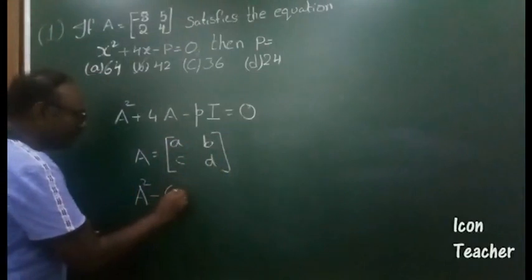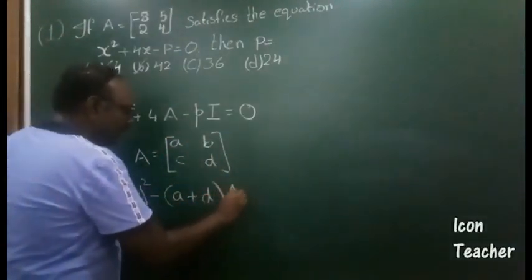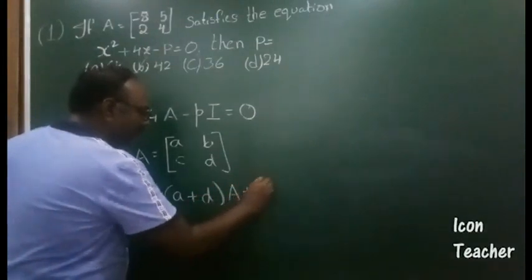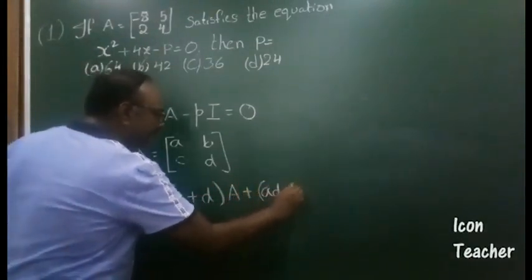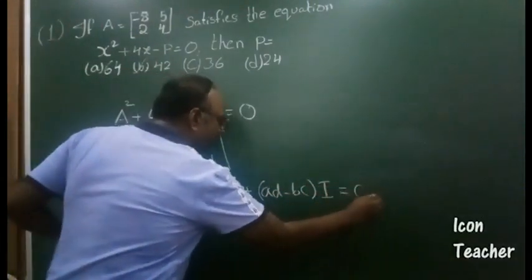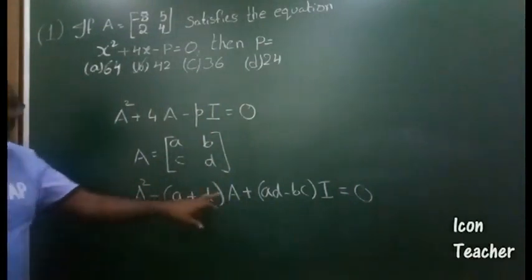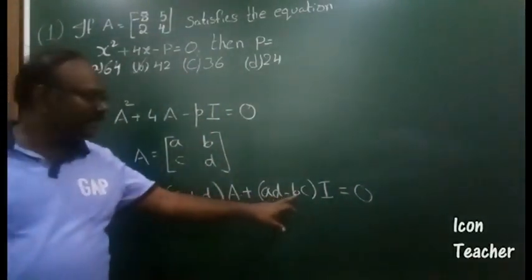minus (a + d)A plus (ad - bc)I is equal to 0. So this is a very simple equation: A² - (a + d)A + (ad - bc)I = 0.